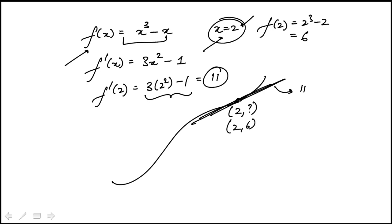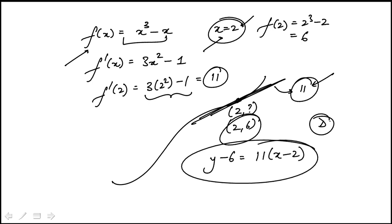So we essentially need to find the equation of the line that passes through 2, 6, slope 11. You may have already recognized that in the answer choices, there's only one choice that has a slope of 11. So you could have just picked that one without doing this part. But if we use the point slope form, the equation would be 11 times x minus 2, which does indeed match with choice D.